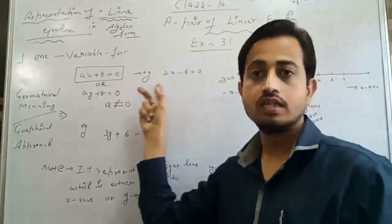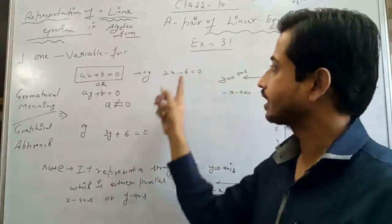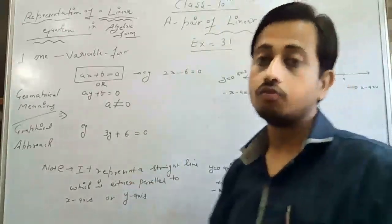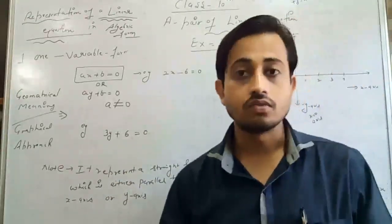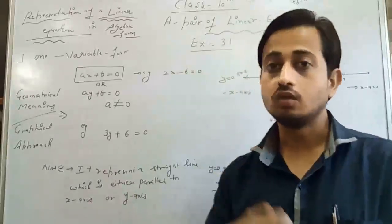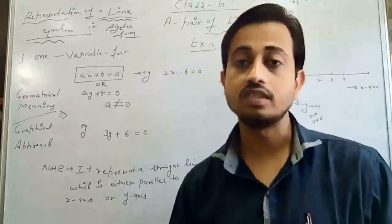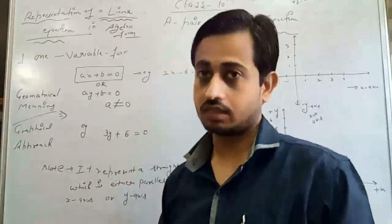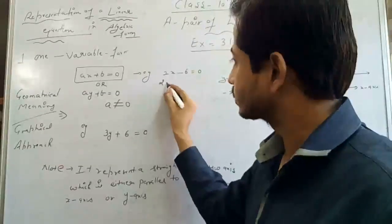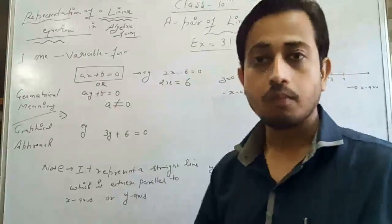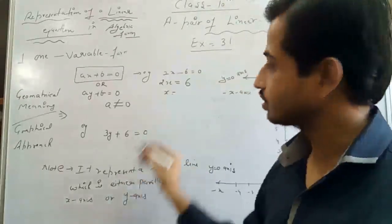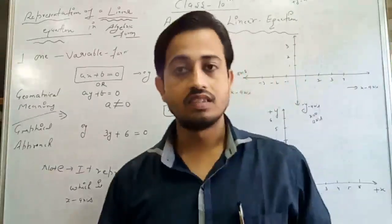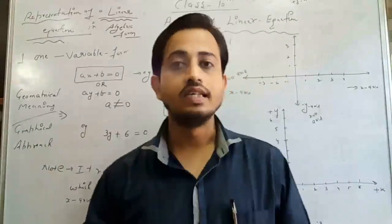For example, 2x minus 6 is the general form of a linear equation in one variable, where x is the one variable. This is the algebraic representation of a linear equation. You can solve for the values of x — it gives the zeros of the equation, meaning the point at which it cuts the x-axis. If we solve this: 2x minus 6 equals zero, then 2x equals 6, so x equals 6 divided by 2, which equals 3. We get the value x equals 3. This is the algebraic representation and solution of a linear equation.